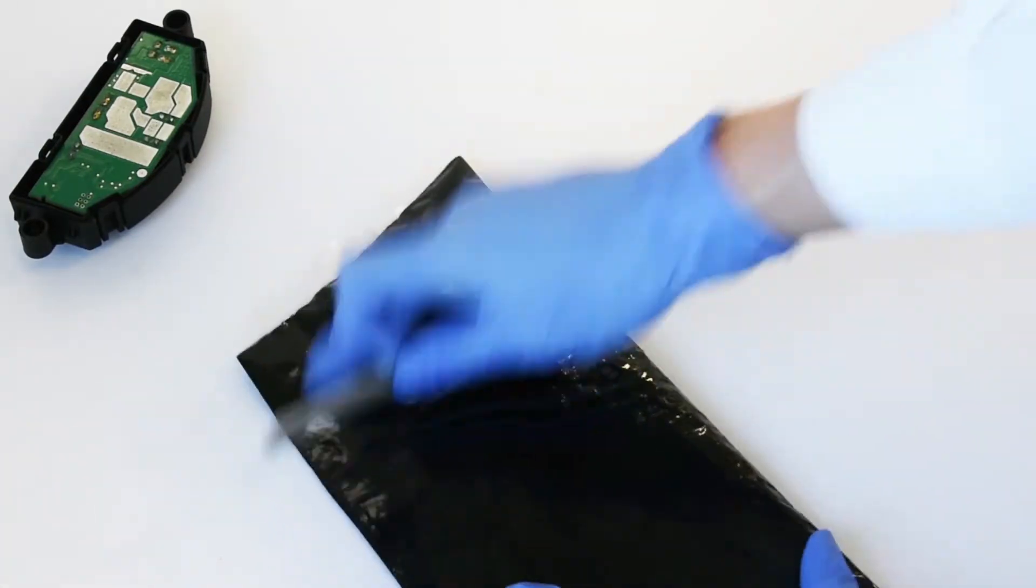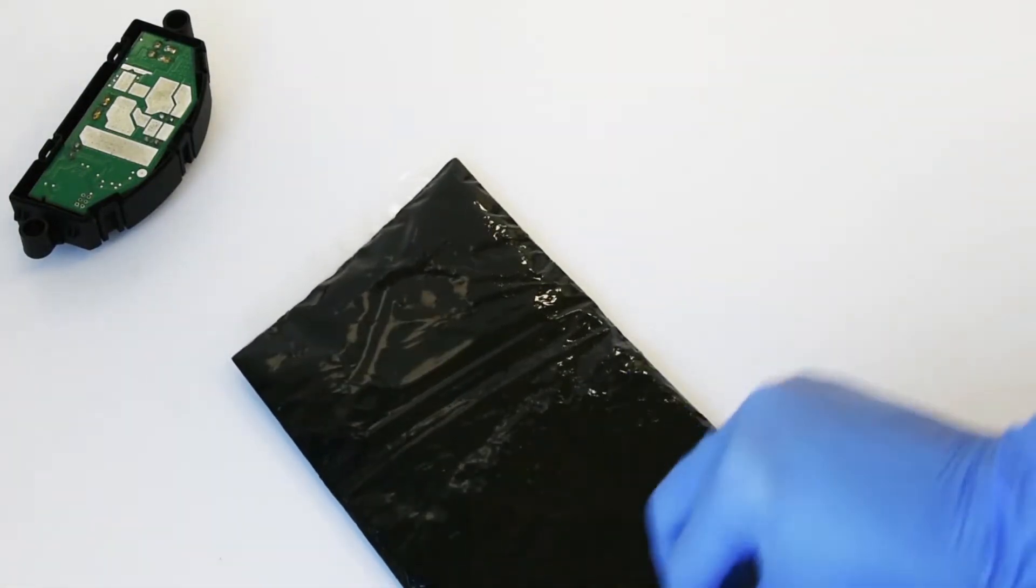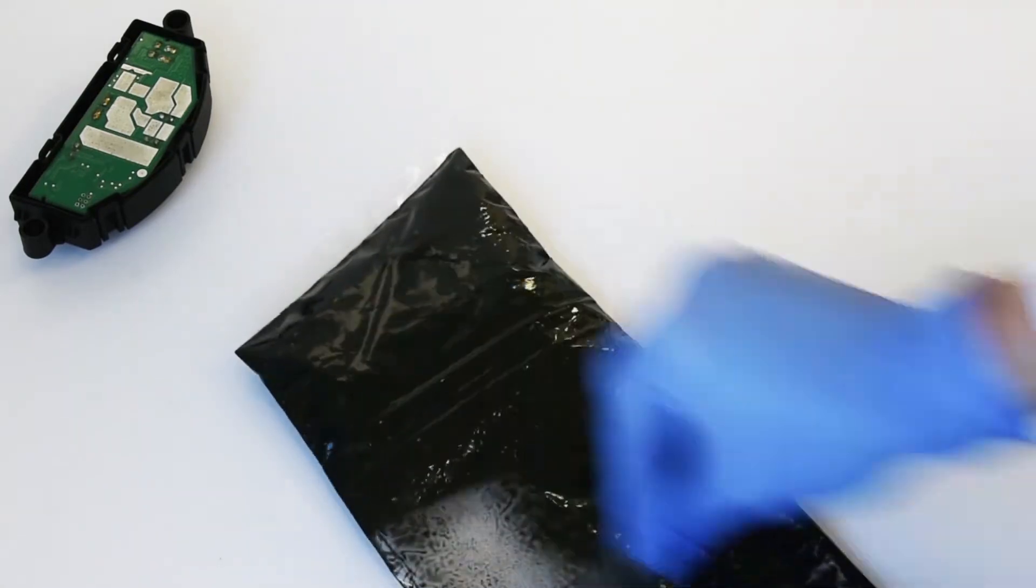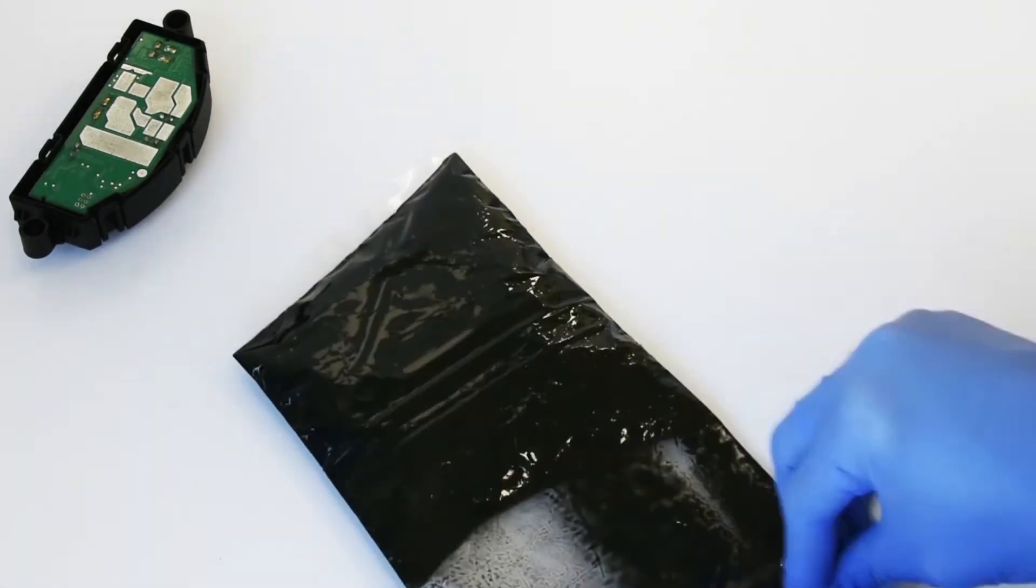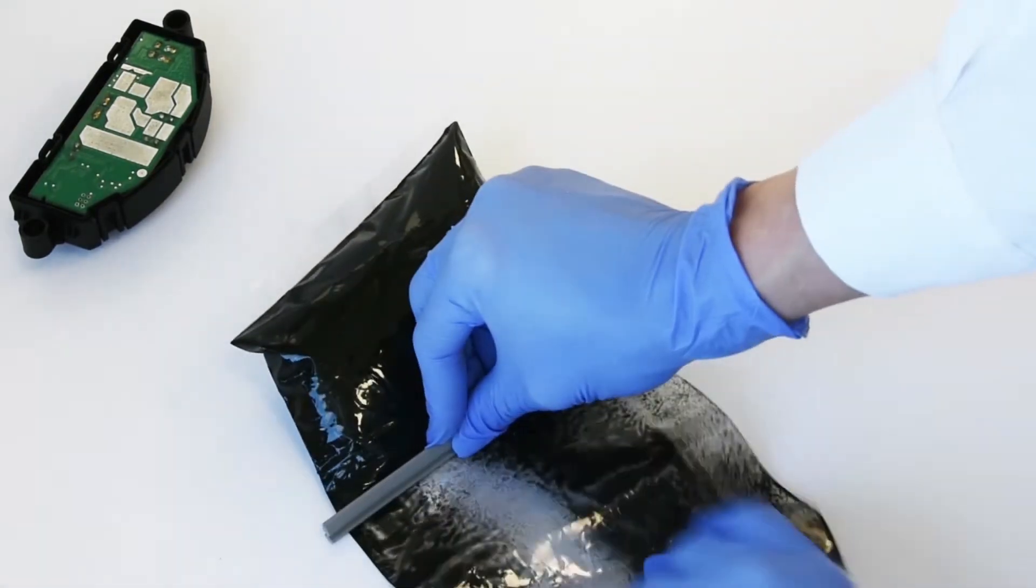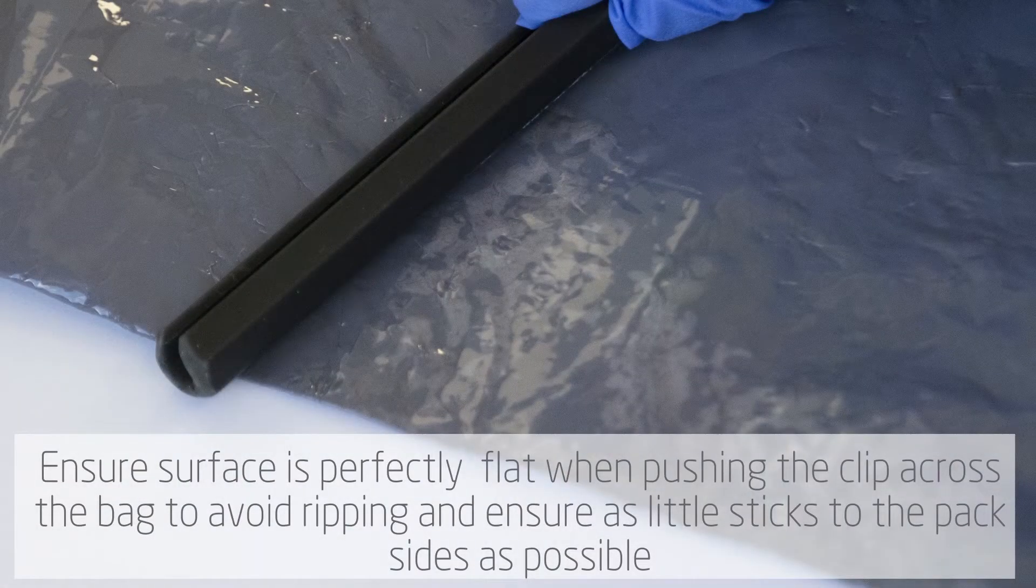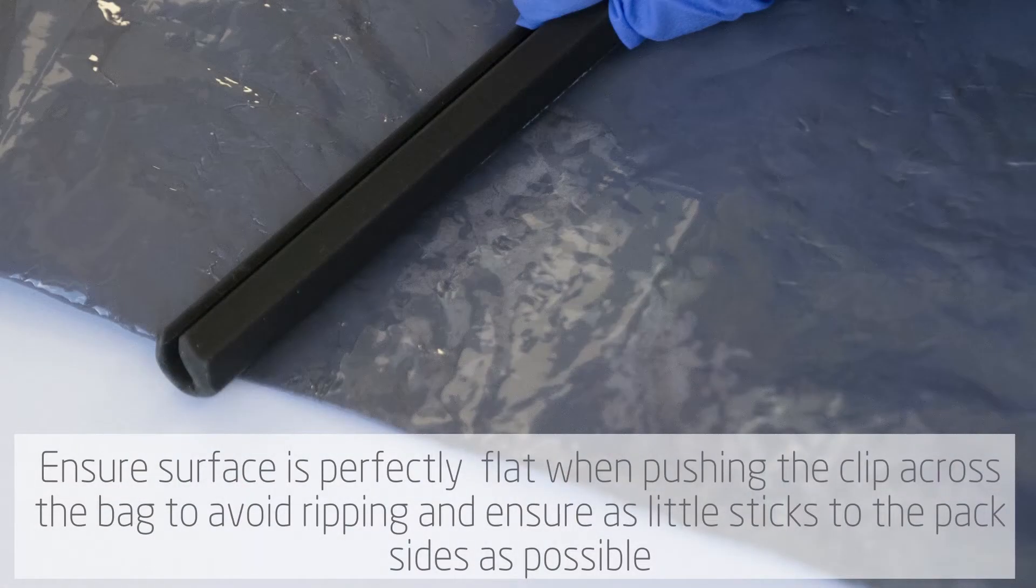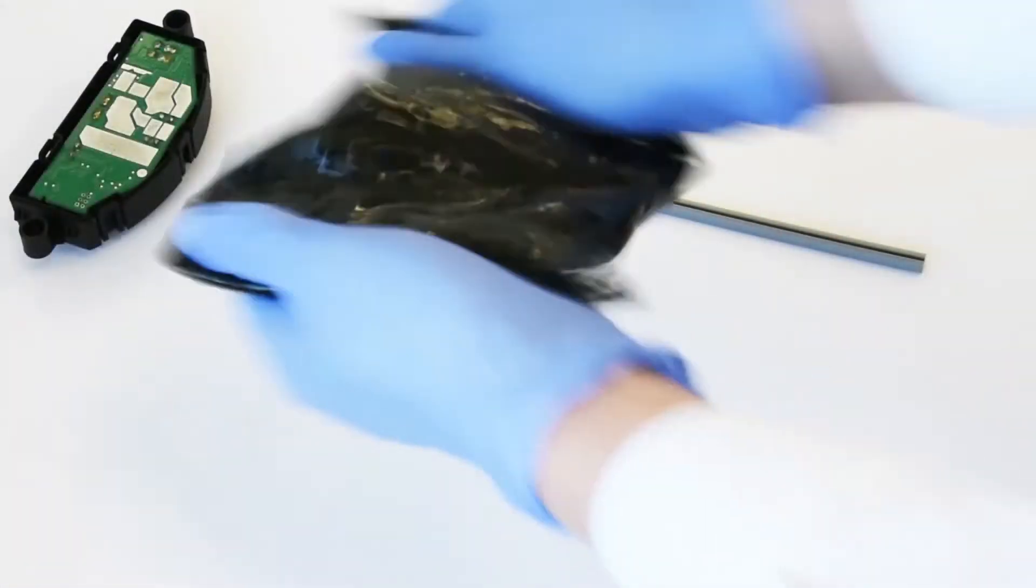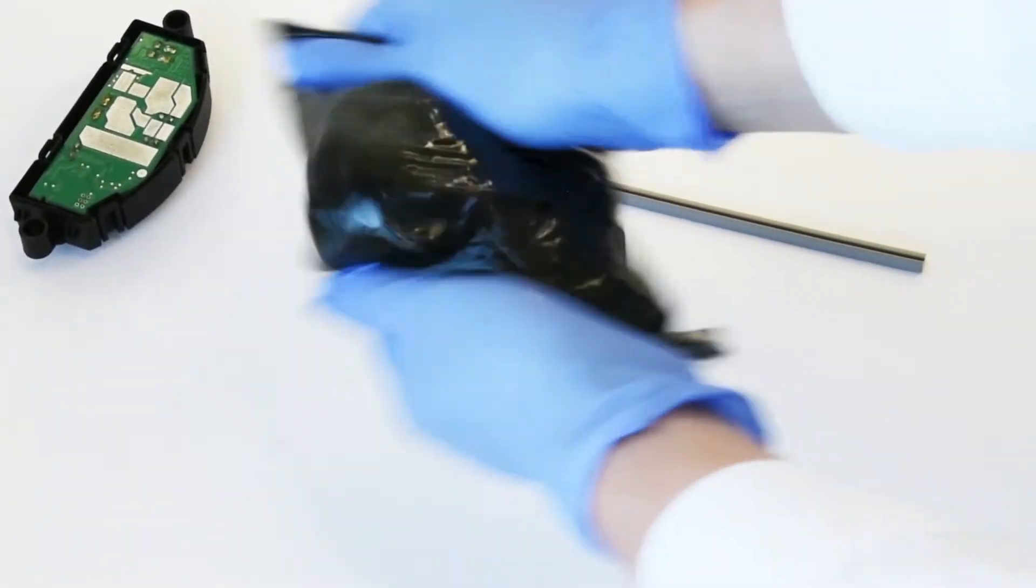To ensure the two parts mix thoroughly, use the clip to push the resin together ensuring as little as possible sticks to the pack sides. This is best achieved on a perfectly flat surface so as to avoid any material sticking to the pack sides and avoid the risk of grit on the surface splitting the pack.